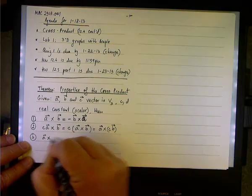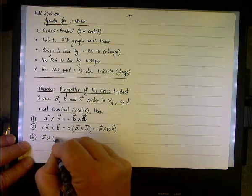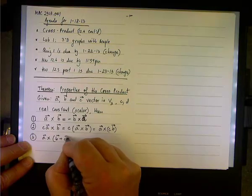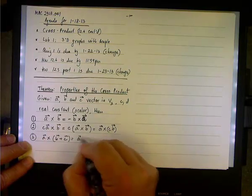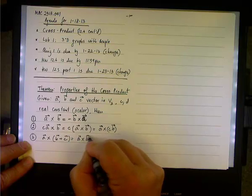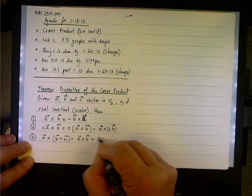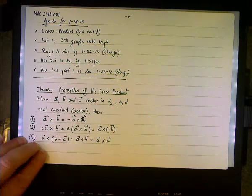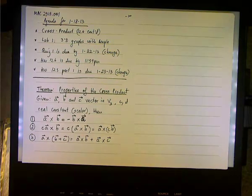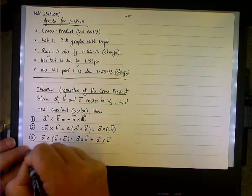Some sort of a distributive property. If the vector a is cross multiplied with the sum of two vectors b plus c, like so, then when you distribute it, it would be a cross b plus a cross c. So you have a distributive of a product over addition.